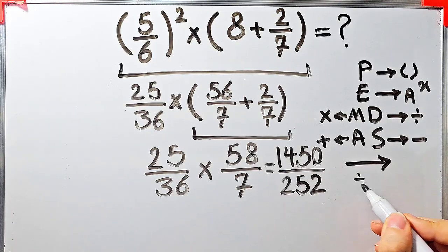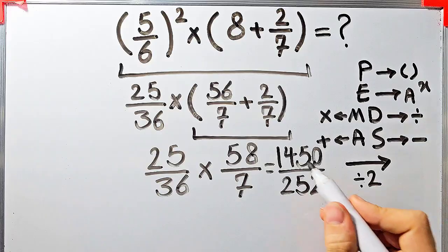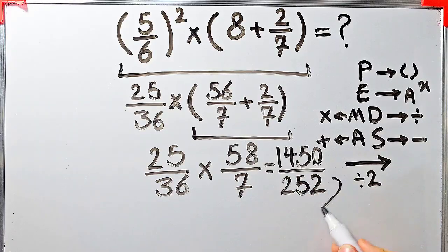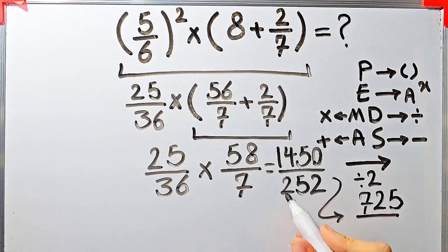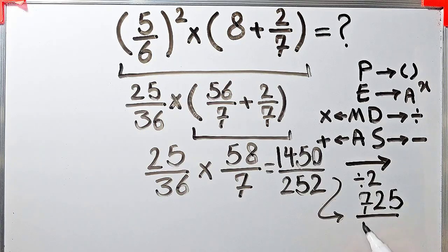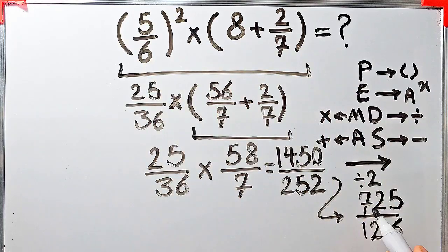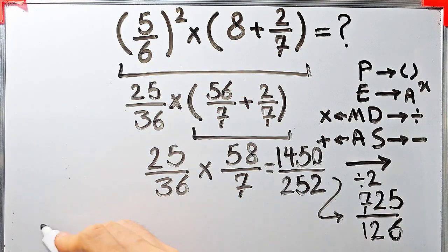Now we divide both by 2: 1450 divided by 2 equals 725, and 252 divided by 2 equals 126. The final answer of this question equals 725 over 126. Thanks for watching guys — to see more math videos, subscribe to the channel.